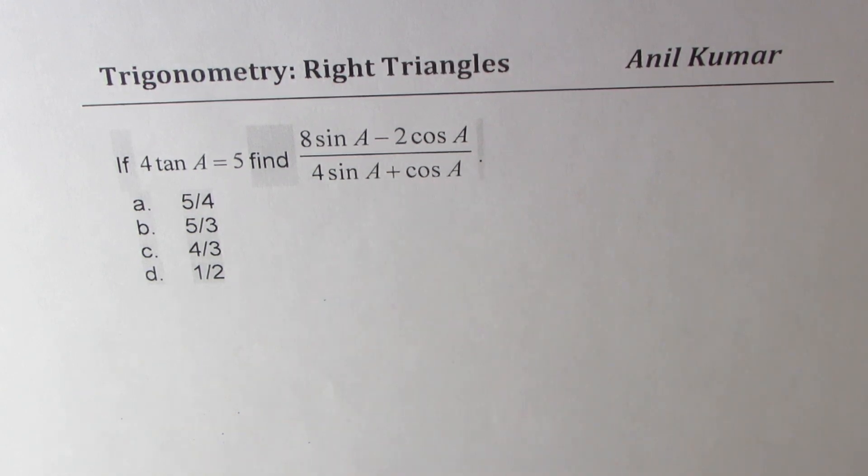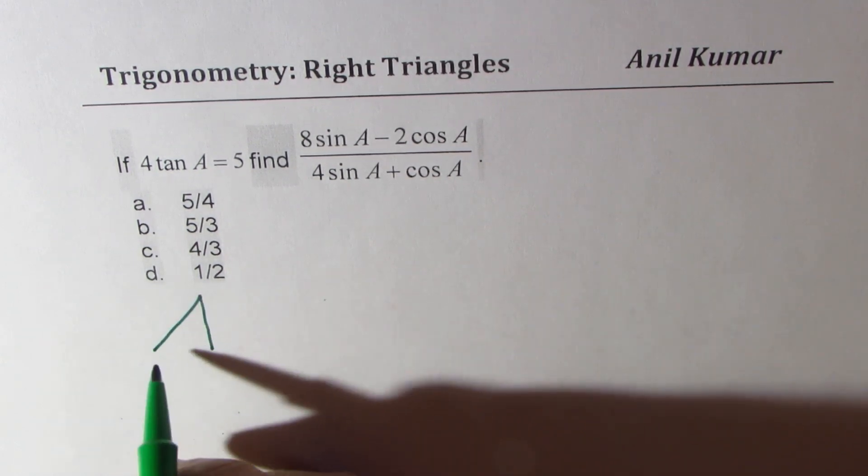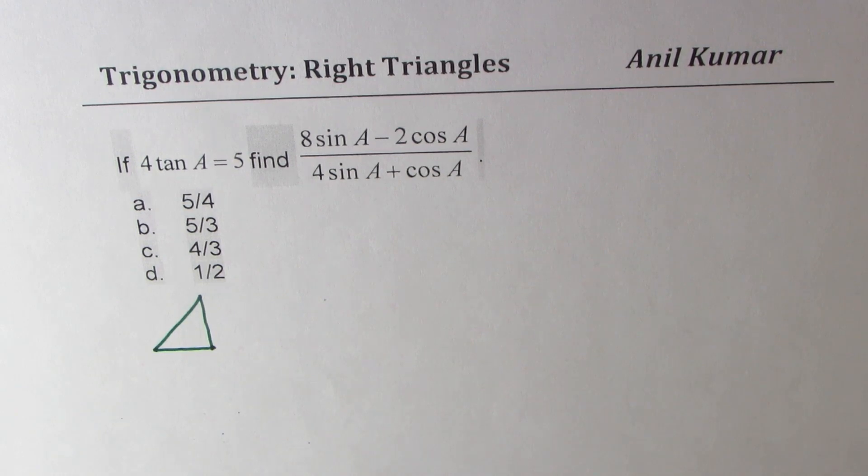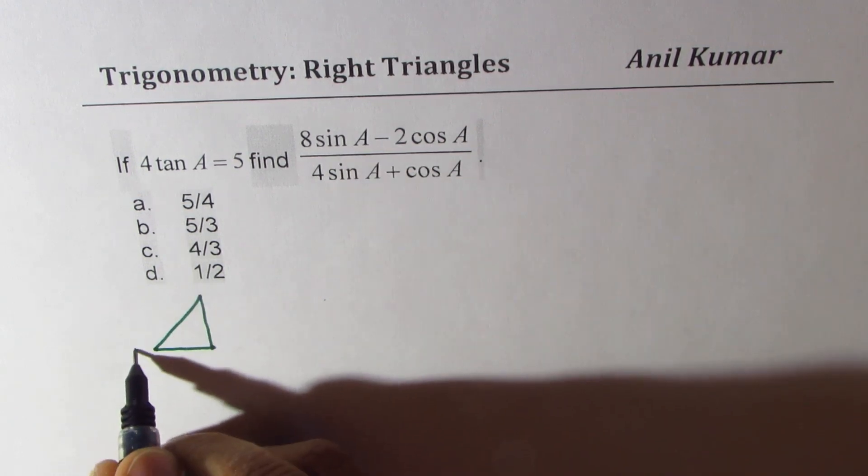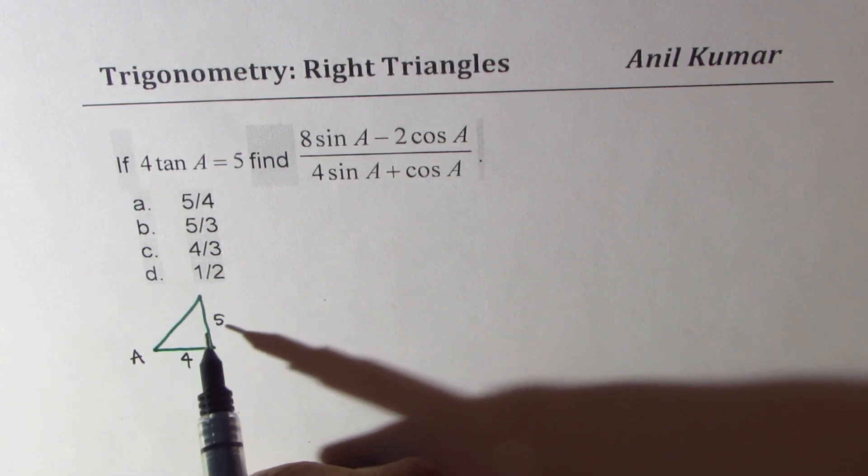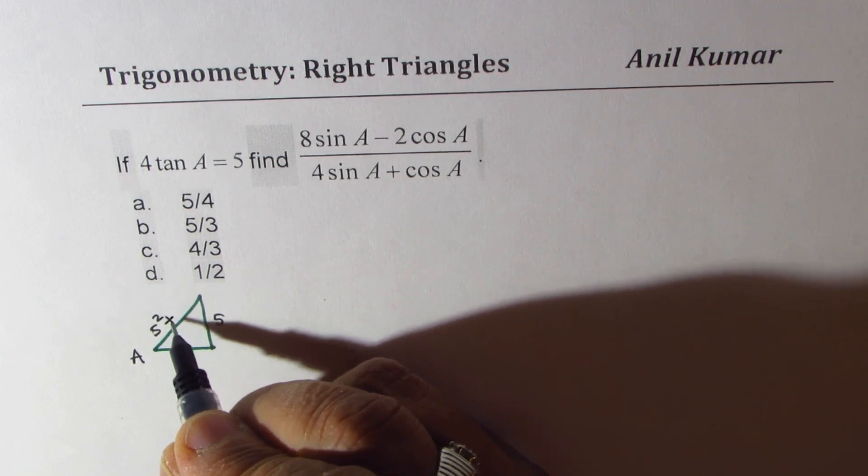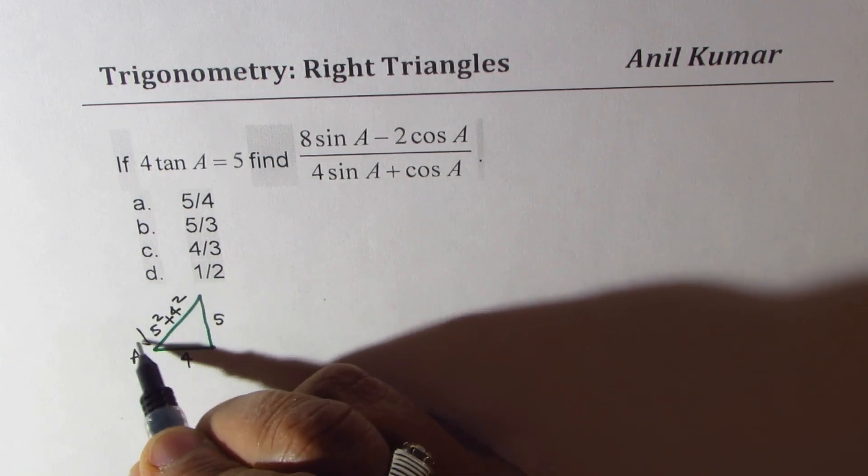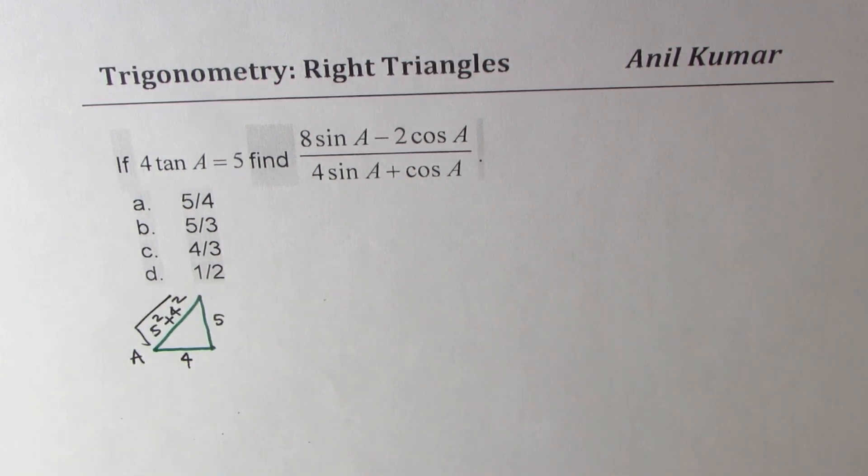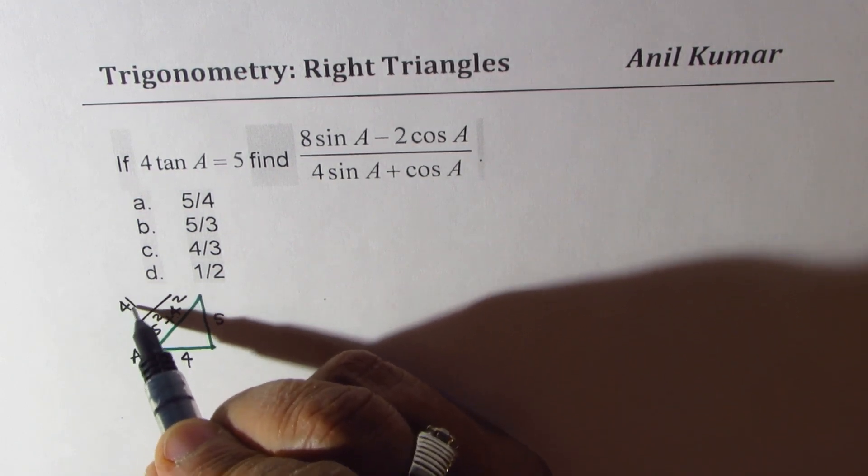Now here, if you make a triangle, which is similar to what we did, in that case, you do get the value of tan A as 5 over 4. And then you can find out what this side is, which is not a perfect square, which is square root of 5 square plus 4 square, so it is square root of 41.